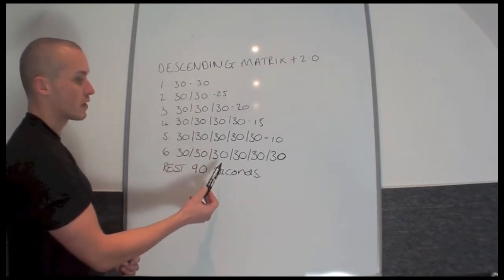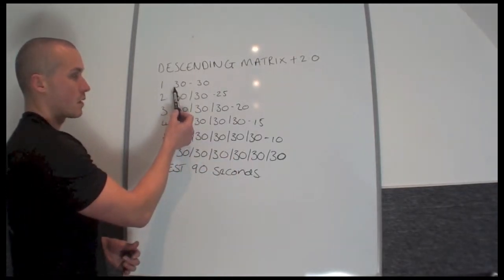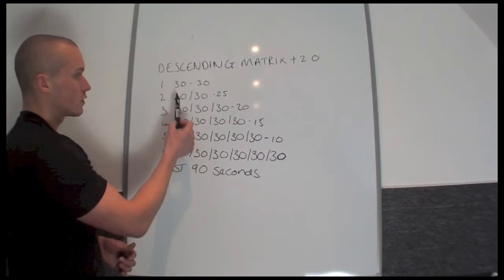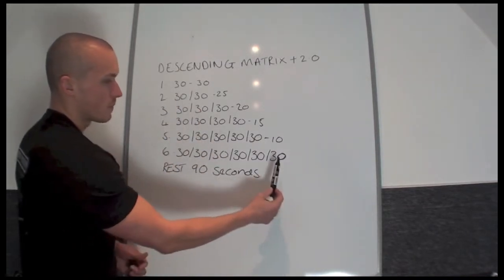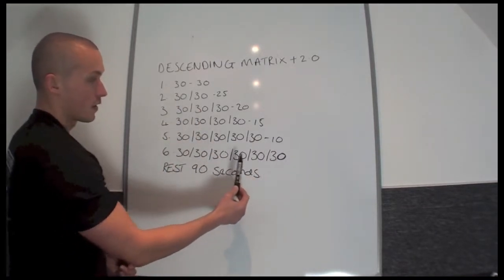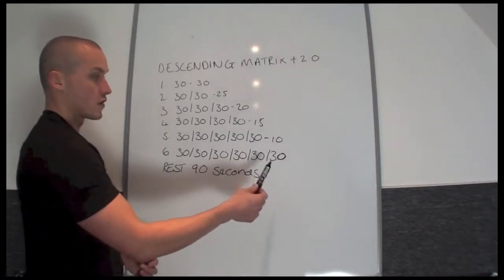Different to the Ascending Matrix, you then go back to the beginning and you start again. So if you're using six different exercises you build the exercises up.